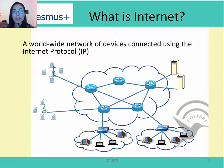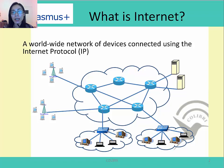So let's start with a very simple question: What is internet? We all know that internet is a network of devices connected to each other using internet protocol or IP protocol. Initially, internet was designed to connect computers only, but nowadays a lot of other devices can be connected to the internet, such as mobile phones, cars, sensor nodes, and so on.